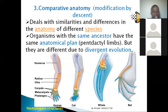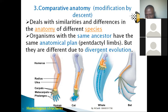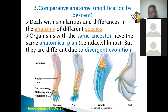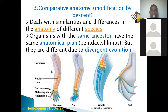Studying these anatomical similarities helps us understand who descended from whom and where divergence occurred. Most vertebrates share the same basic anatomical plan, indicating they came from the same ancestor but diverged into different environments — this is called divergent evolution.